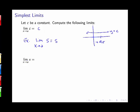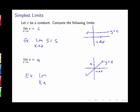The second simplest limit is the limit as x goes to some number a of x. We think of the graph y equals x, and as I approach a on this graph, getting closer and closer to a, I get closer and closer to the value a within this function. So the limit as x goes to a of x equals a. For example, the limit as x goes to 2 of x equals 2.